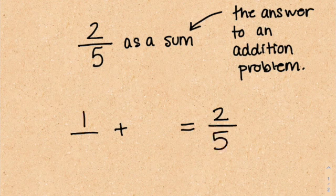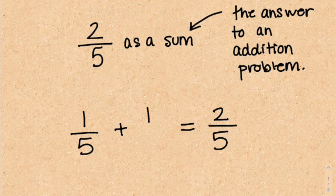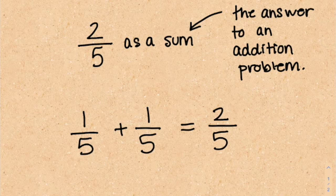So I can do 1 over 5 plus 1 over 5, and that gives me 2 over 5. This one is pretty simple, so don't let it confuse you guys.